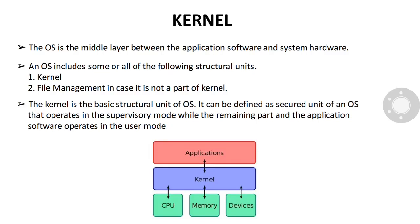In this video we are going to discuss about the kernel. The operating system is the middle layer between the application software and system hardware. An OS includes some or all of the following structural units. The first unit is the kernel and the second is file management, in case it is not a part of the kernel.